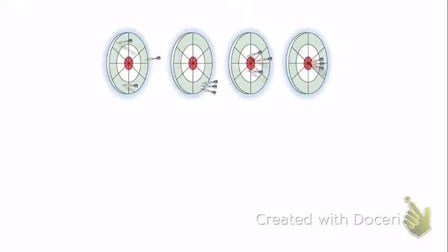Here we have a target analogy where we threw darts at a target, and the darts represent data collected from trials. The bullseye is the goal — it represents our accepted or true value. We want the darts to hit the center bullseye, which represents accuracy. Each dart represents a different experimental trial, and here we have three trials represented.